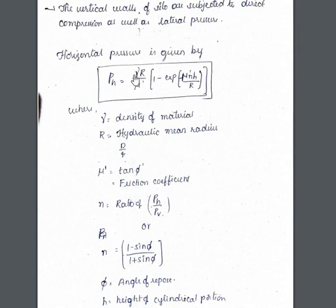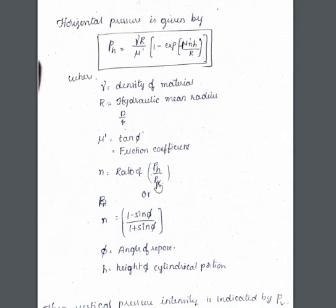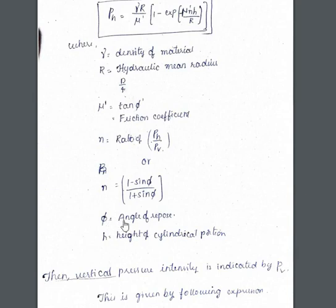The horizontal pressure formula in Janssen theory is: pH = (γR / μ') × (1 − e^(−μ'nH/R)), where γ is the density of the material, R is the hydraulic mean radius (diameter of silo divided by 4, or radius divided by 2), μ' is tan φ' (the friction coefficient), n is the ratio of pH to PV (also written as (1 − sin φ) / (1 + sin φ)), and h is the height of the cylindrical portion. Note that φ and φ' are different angles.